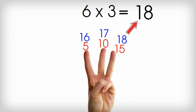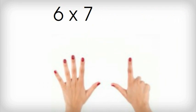Let's say I was going to do something a little harder, like 6 times 7. So I'd hold up 7 fingers, and I'm going to count by 5s: 5, 10, 15, 20, 25, 30, 35.